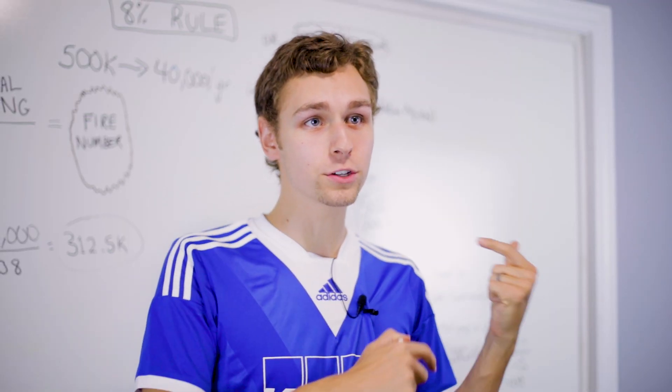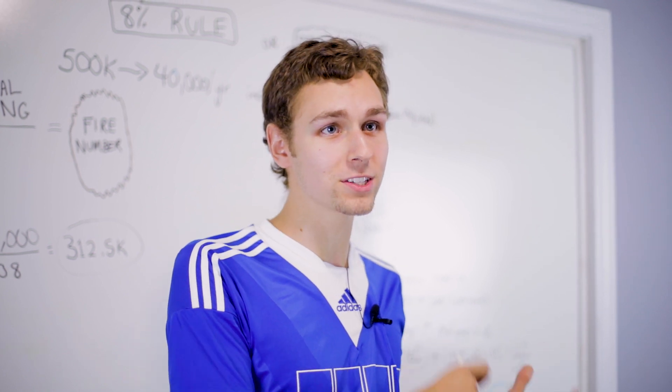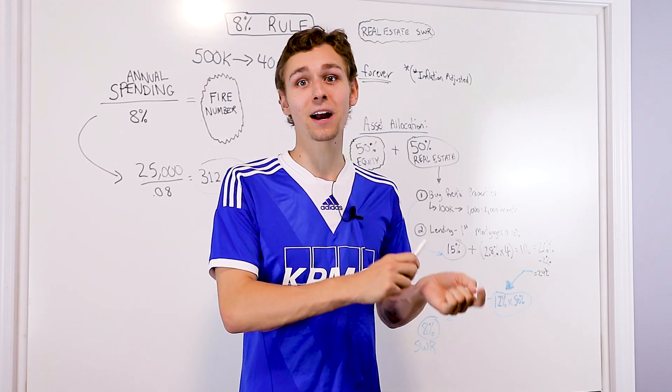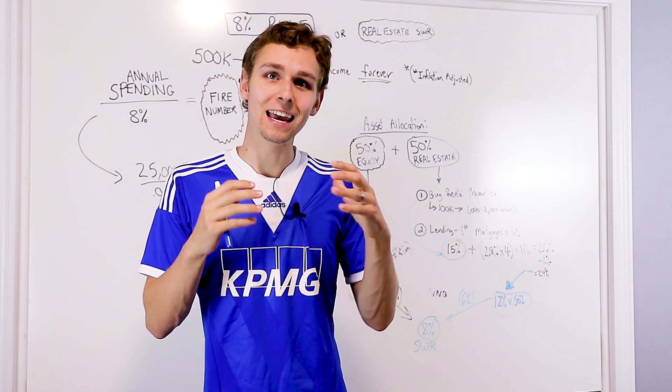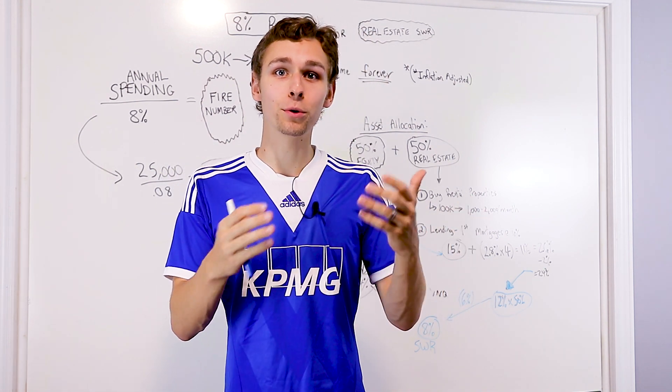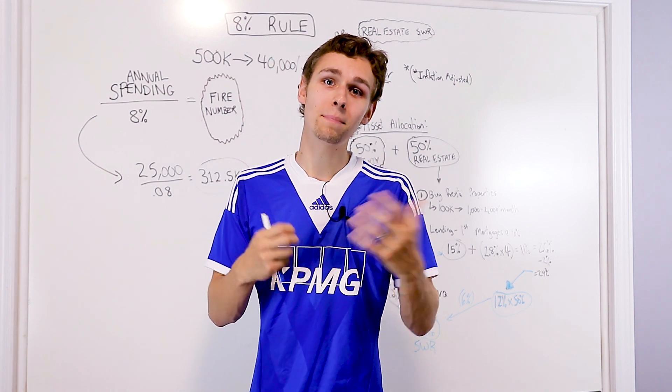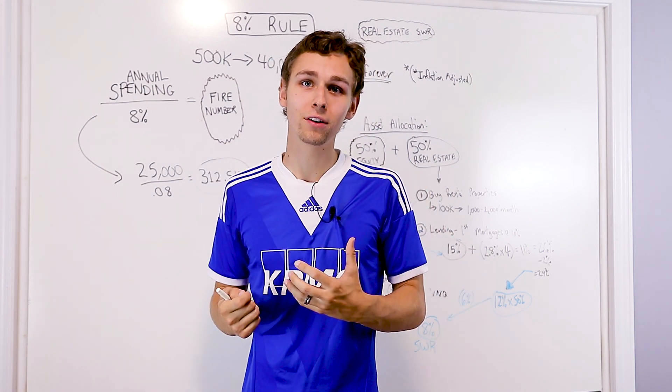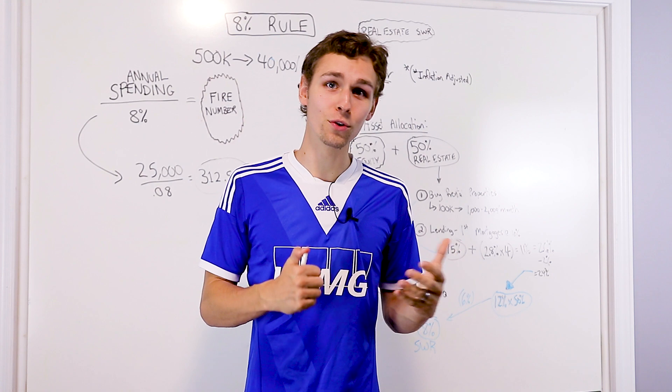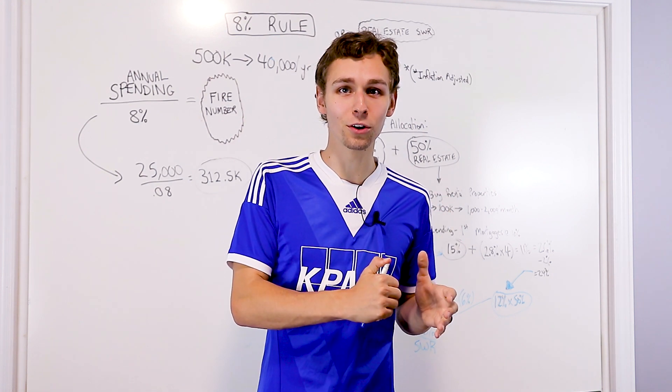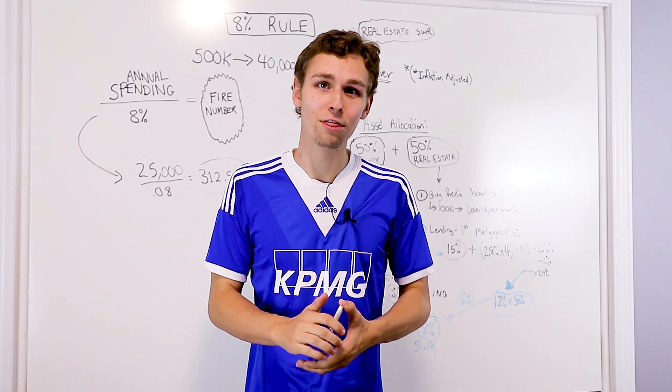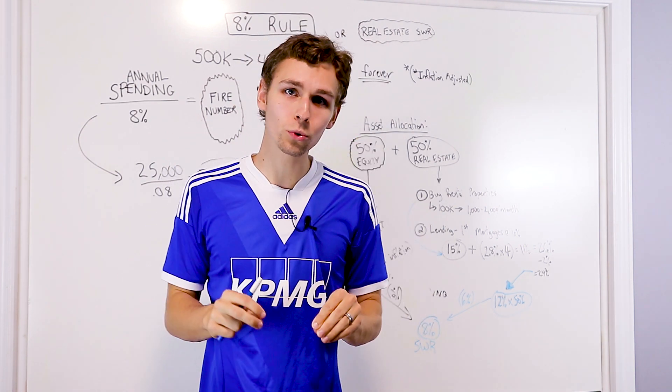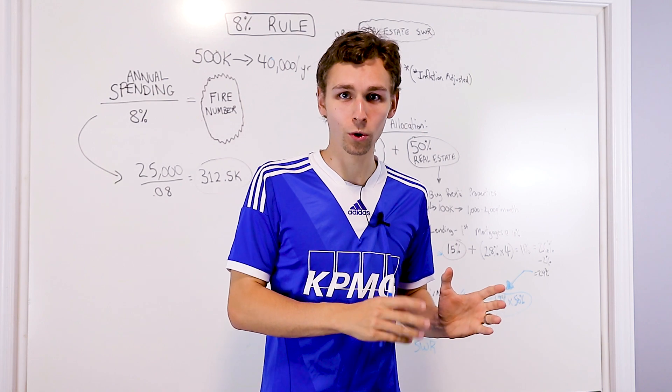Today's video is going to be a little bit of a spin on the original 4% safe withdrawal rate to determine how you could retire a little bit faster by mixing in rental properties and real estate into your retirement portfolio to produce passive income and passive cash flow that you can live off and hopefully generate more cash flow than you could with just a straight standard 70% equities, 30% bonds or some mix thereof. So I'm calling it the 8% rule to differentiate from the 4% rule.